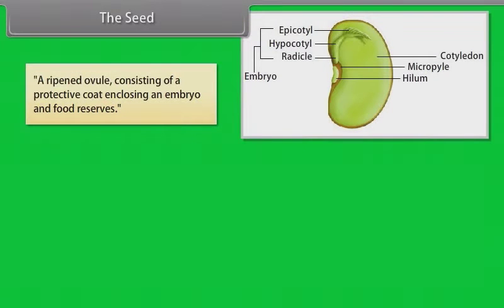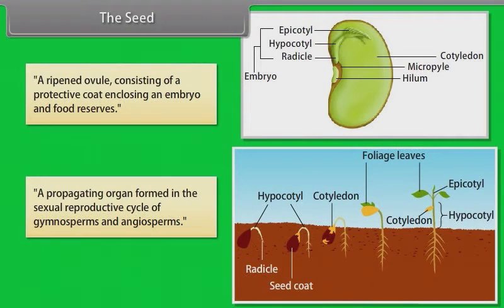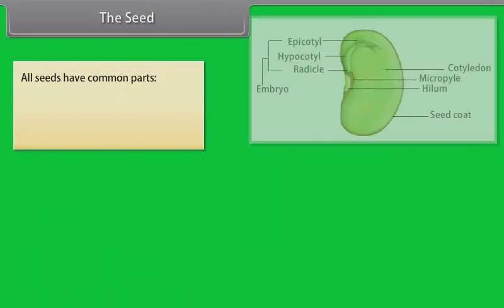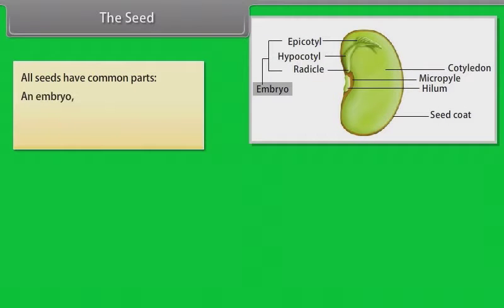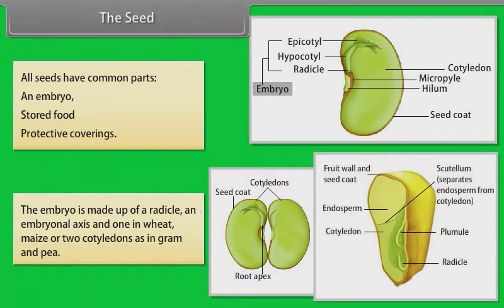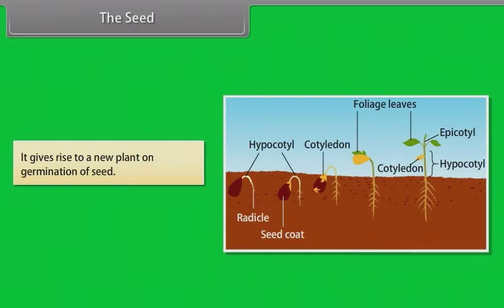The seed is a ripened ovule consisting of a protective coat enclosing an embryo and food reserves. It is a propagating organ formed in the sexual reproductive cycle of gymnosperms and angiosperms. All seeds have common parts: an embryo, stored food, and protective coverings. The embryo is made up of a radicle, an embryonal axis, and one cotyledon as in maize, or two cotyledons as in gram and pea. It gives rise to a new plant on germination.